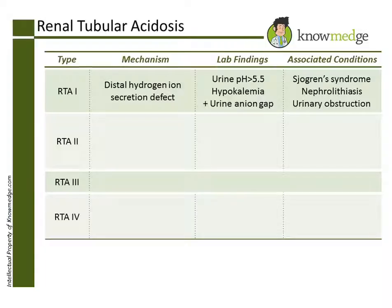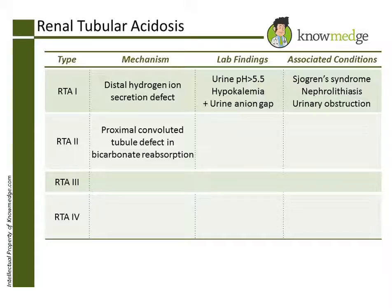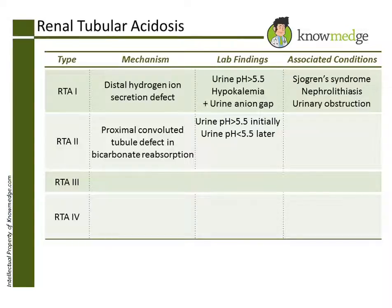RTA type 2 is caused by a defect in bicarbonate reabsorption in the proximal convoluted tubule. This will initially lead to a urine pH greater than 5.5 because bicarbonate is present in the urine. But later, some of the bicarbonate gets reabsorbed in the distal convoluted tubule, and at that time the urine pH will be less than 5.5.